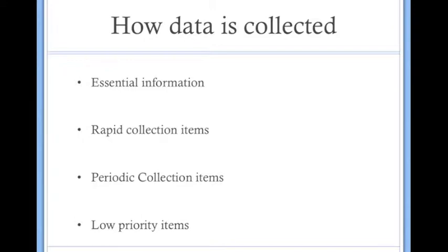So, how can data be collected? There's four different ways. First is essential information, which is pretty self-explanatory. It is information with a high importance in the collecting of data.